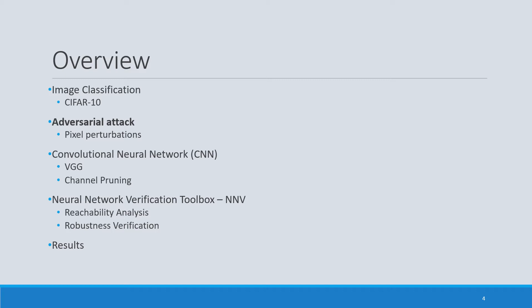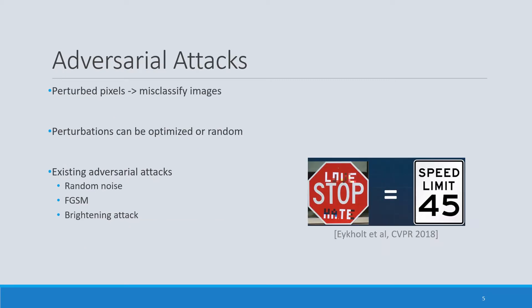Now let's see what adversarial attacks are. An adversarial attack usually consists of perturbing some pixels in the image to make a CNN or other model misclassify it. For example, by modifying some pixels in a stop sign image, we can get the neural network to misclassify it as a speed limit of 40 miles per hour. Perturbations on the pixels can be optimized, such as the fast gradient sign method optimized with respect to the neural network, or they can be random, such as random noise attacks.